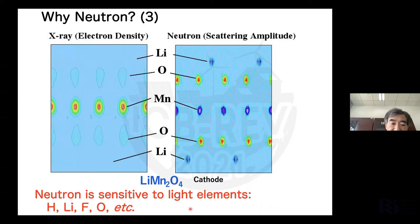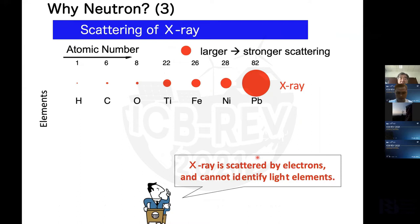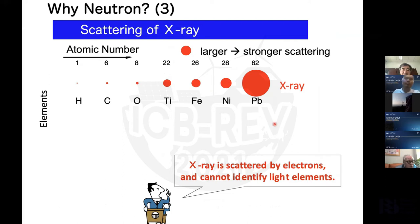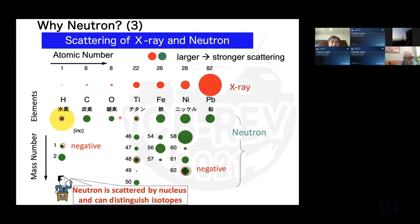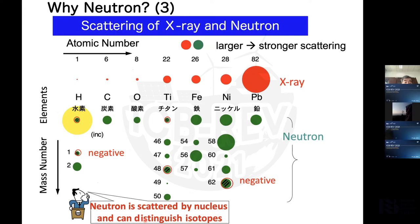Neutron is sensitive to light elements like hydrogen, lithium, fluoride, oxygen, et cetera. For x-rays, the scattering is by electrons and cannot identify light elements — a larger circle means stronger scattering. In the case of neutrons, it doesn't simply depend on atomic number, and we can also distinguish isotopes. So neutron is scattered by the nucleus and can distinguish isotopes.